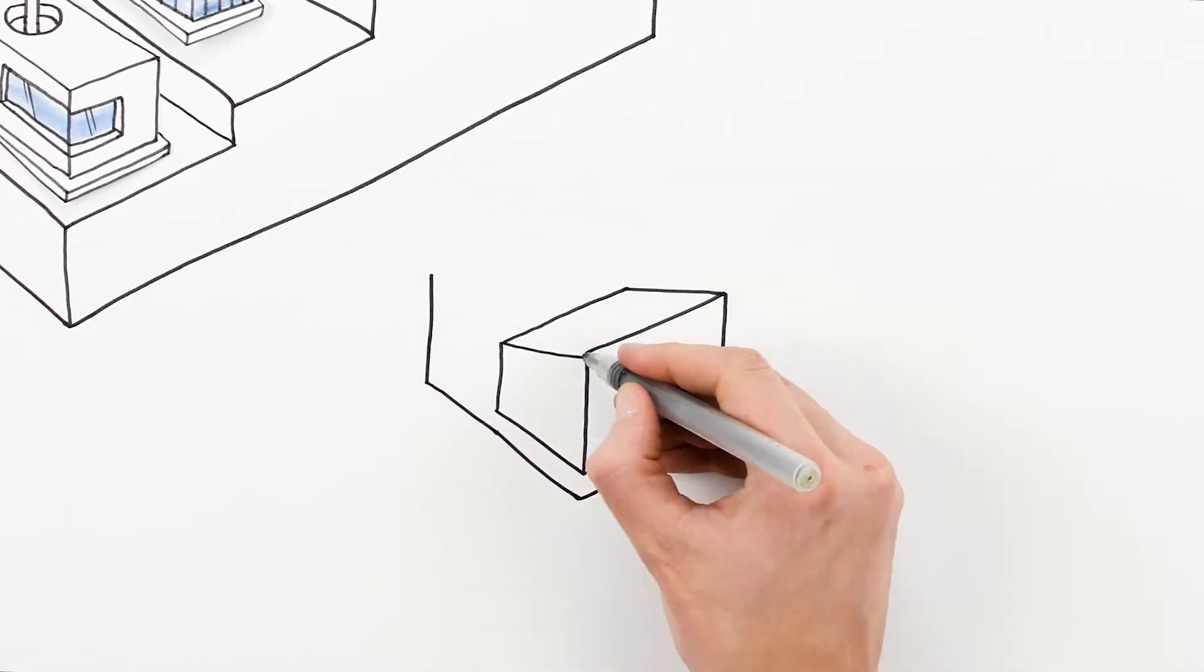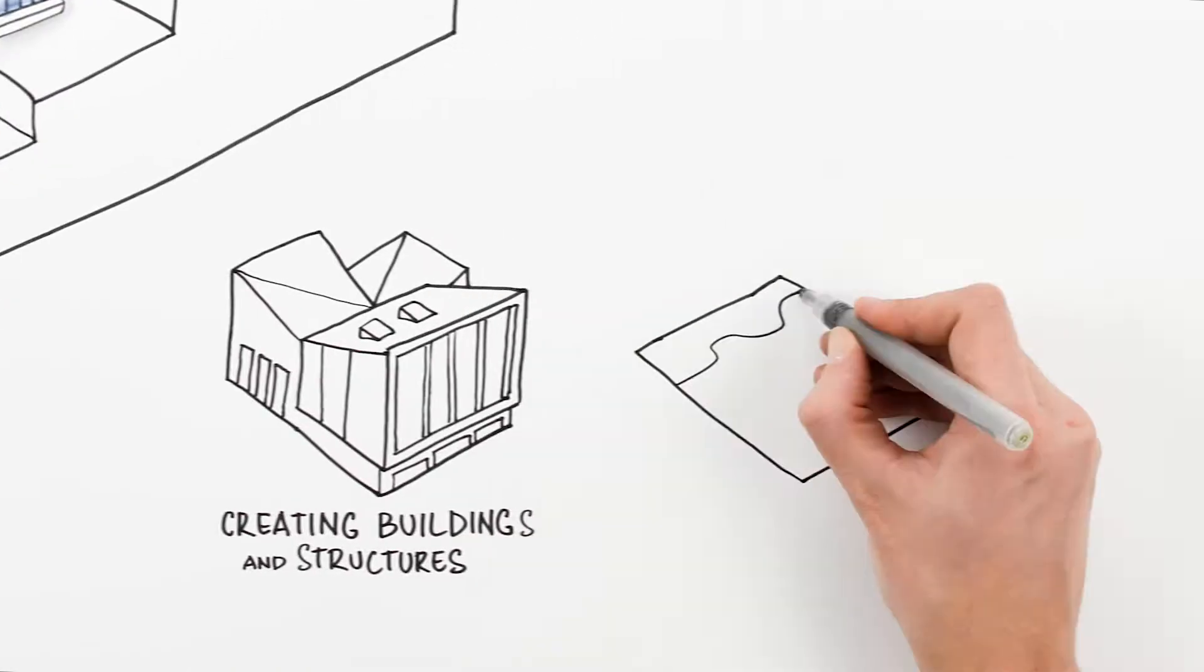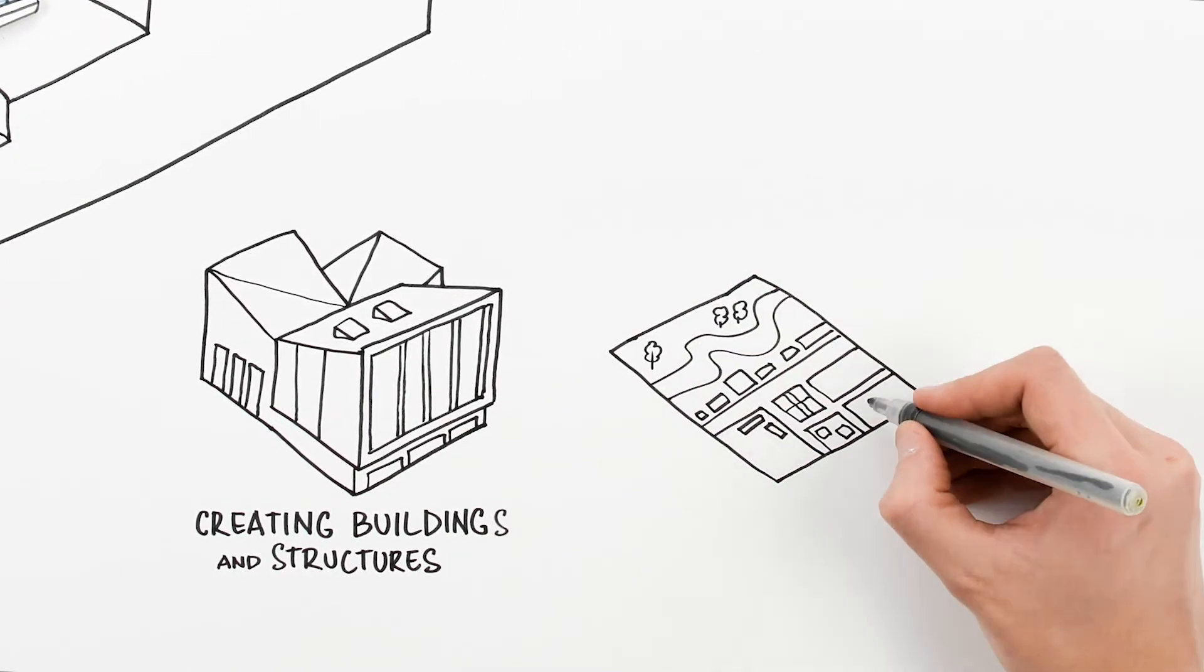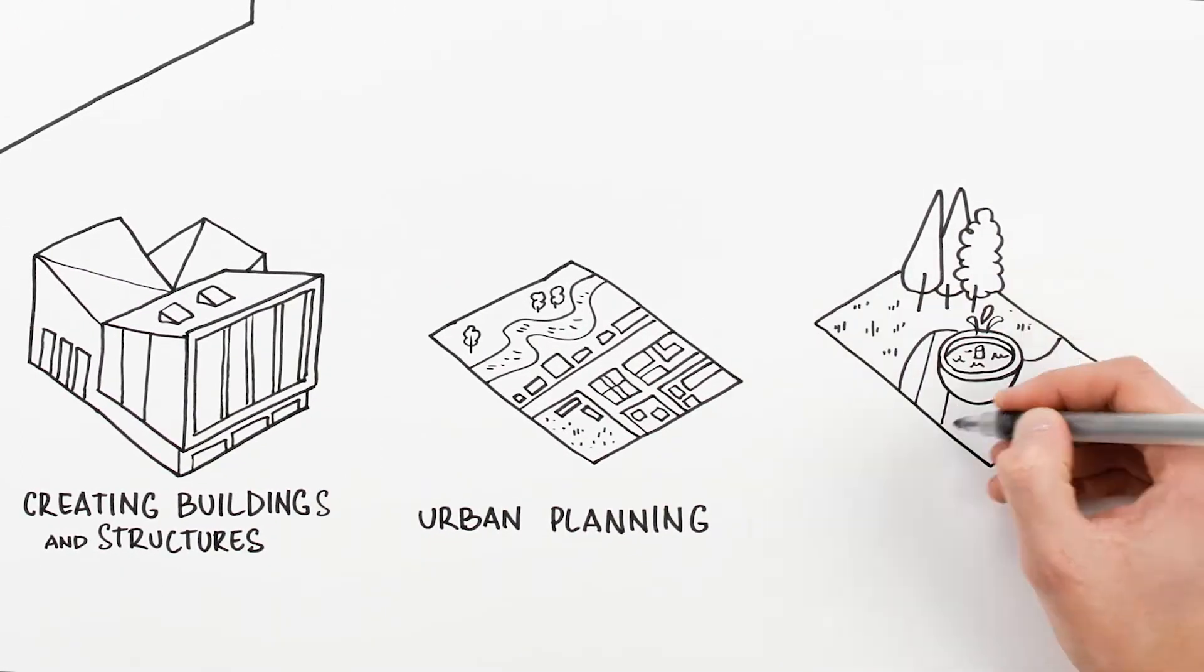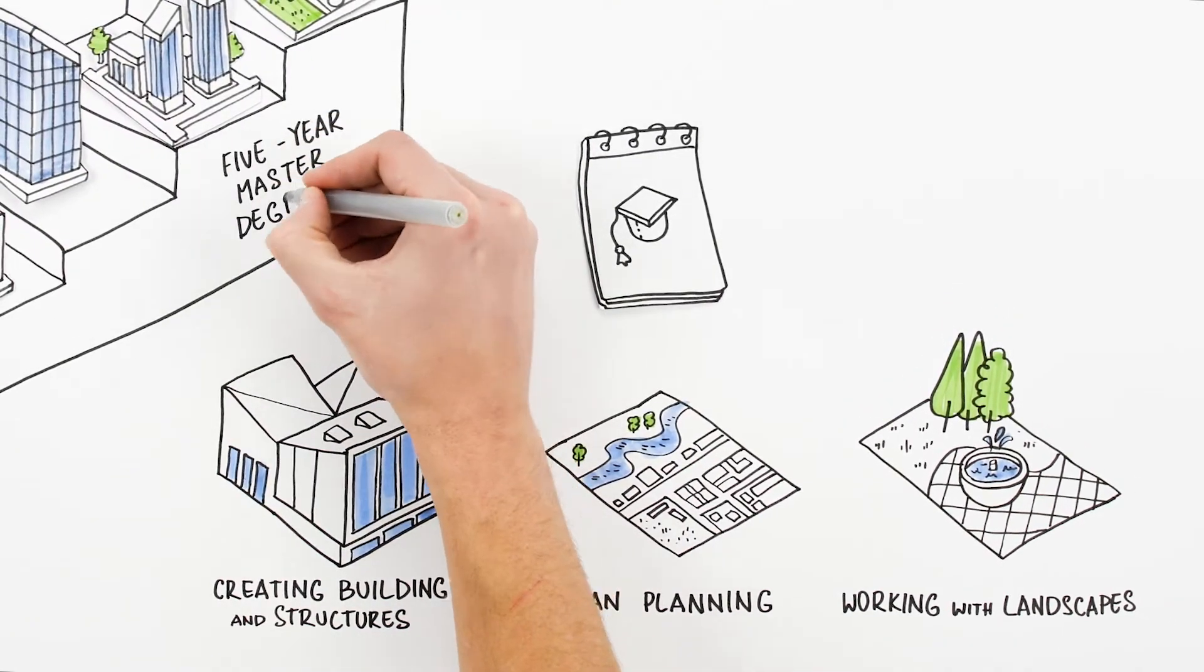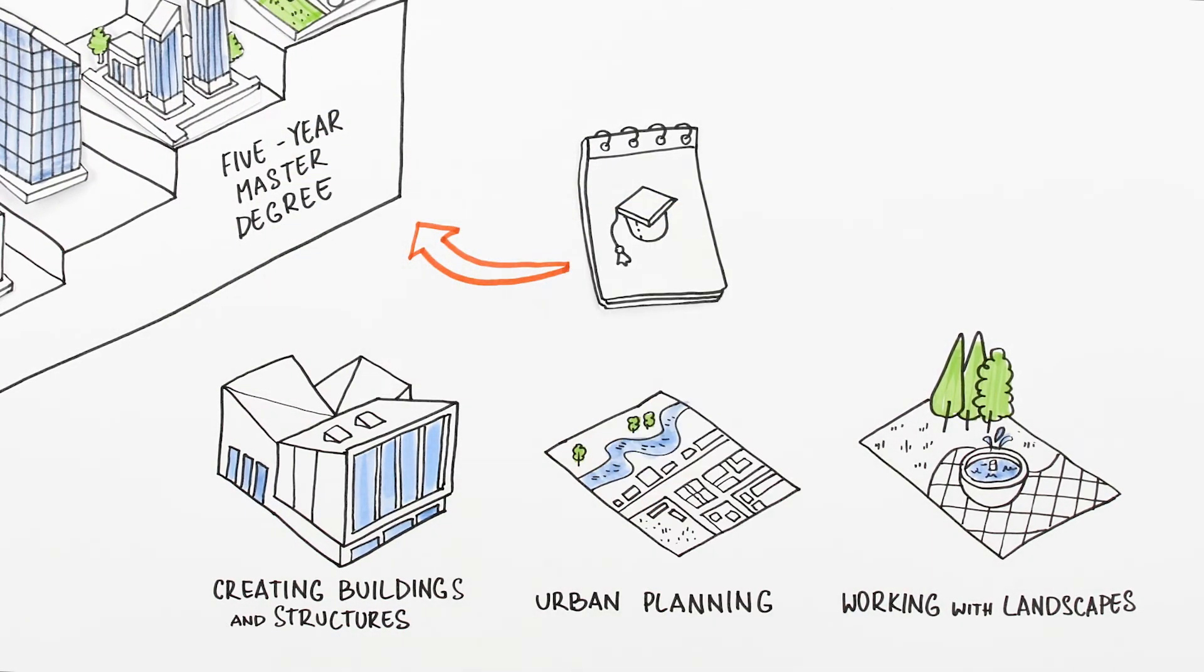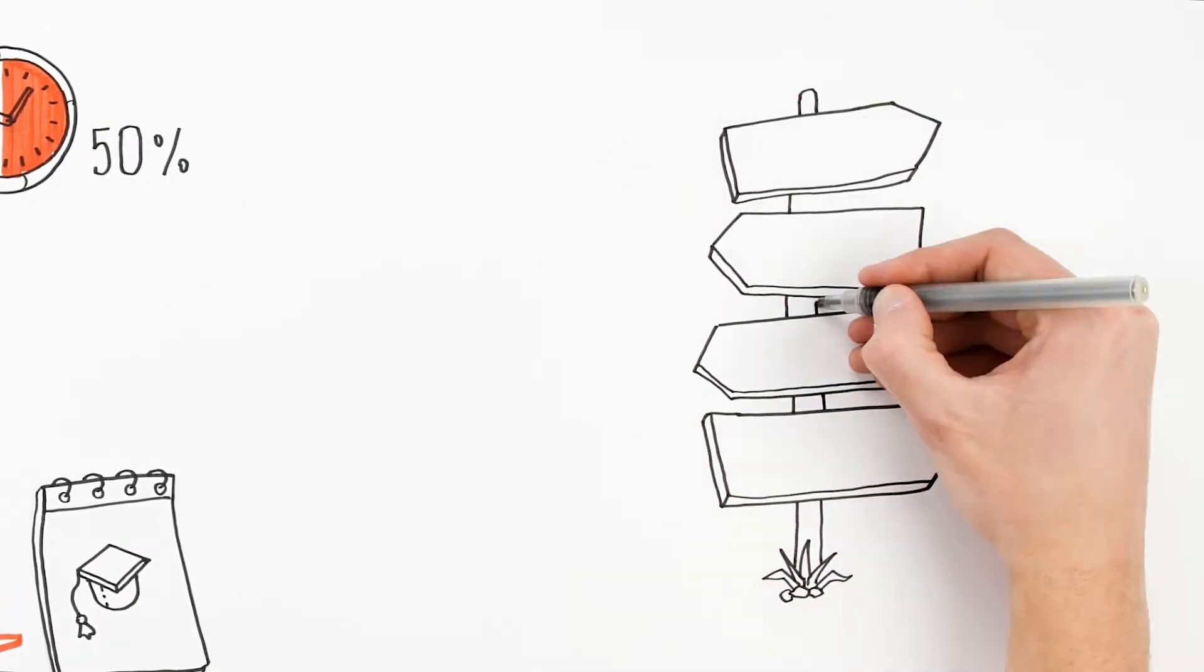KTU studies will prepare you for the career of not only an architect who creates buildings and structures, but also of an urban planner who designs cities or a landscape architect who works with green spaces. In Lithuania, it takes five years to study architecture and receive a master's degree. A lot of paths will be open for you after those five years.